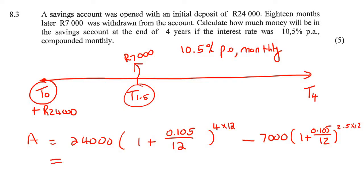Now we can simply go and calculate all of this in one step. The final answer is 27,369.56 Rand.